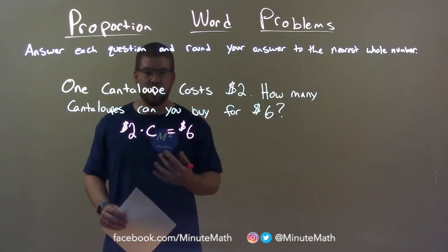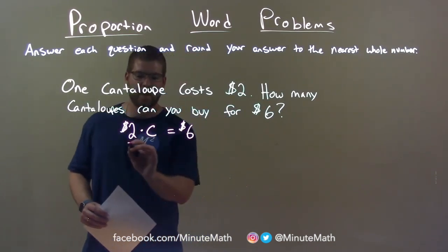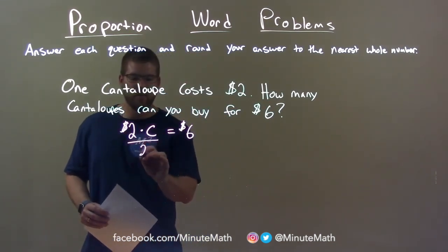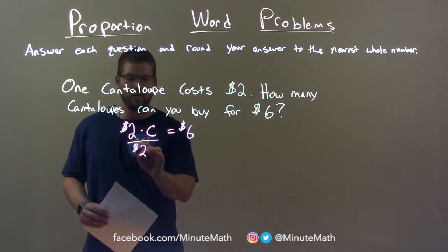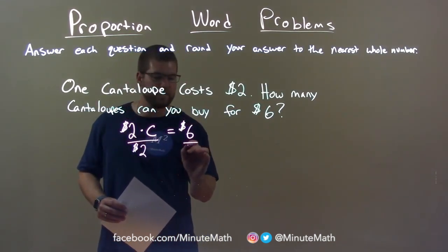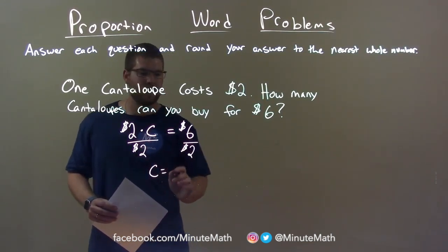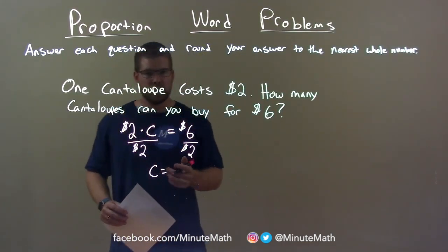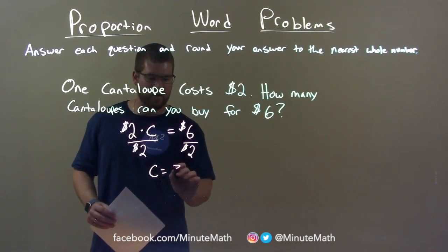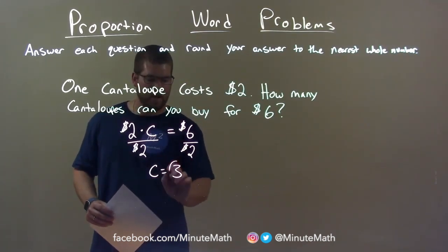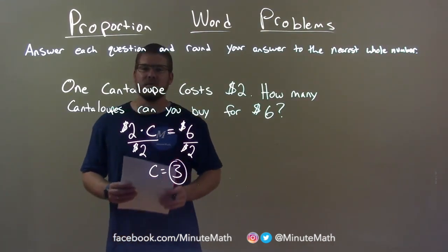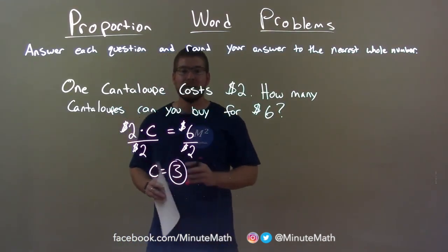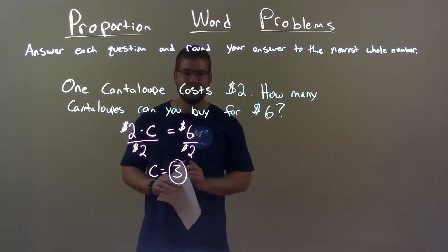Let's solve for C. Divide both sides by $2, and I'm left with C by itself. $6 divided by $2 is just the number 3, and so my final answer is 3 cantaloupes.